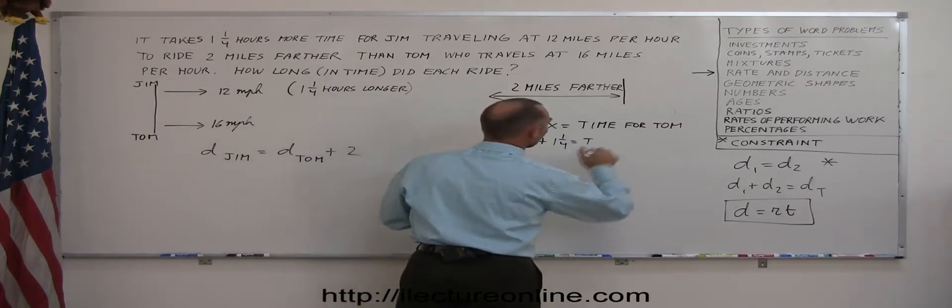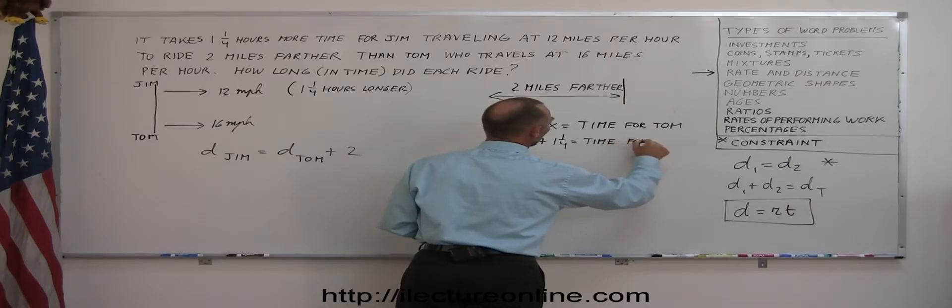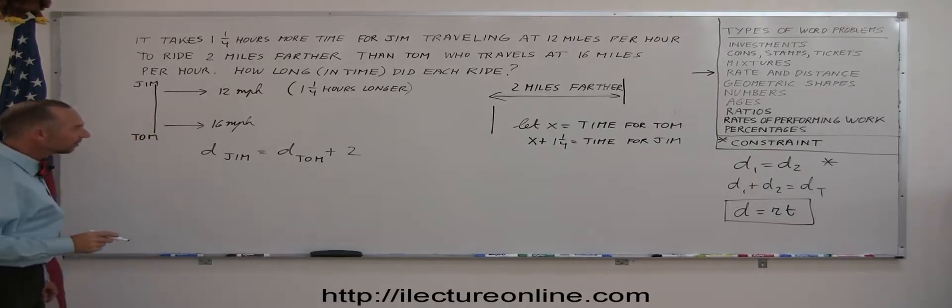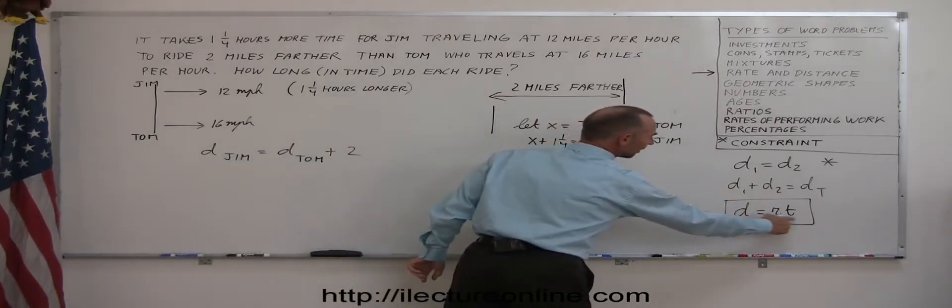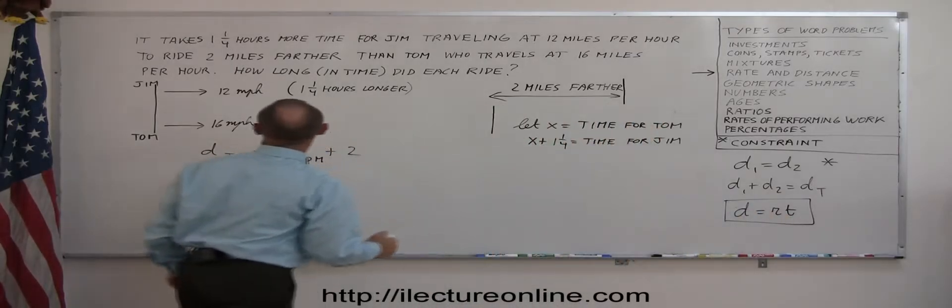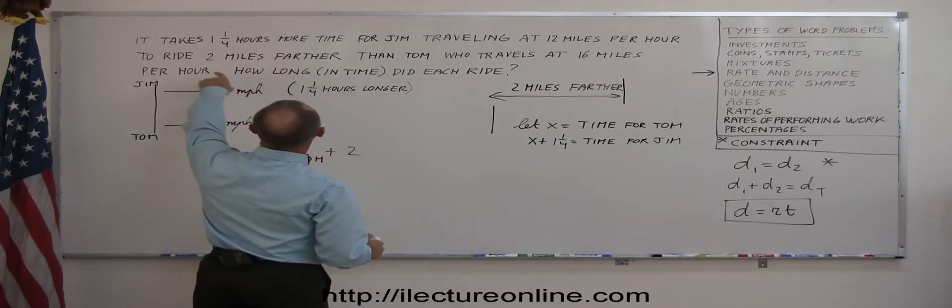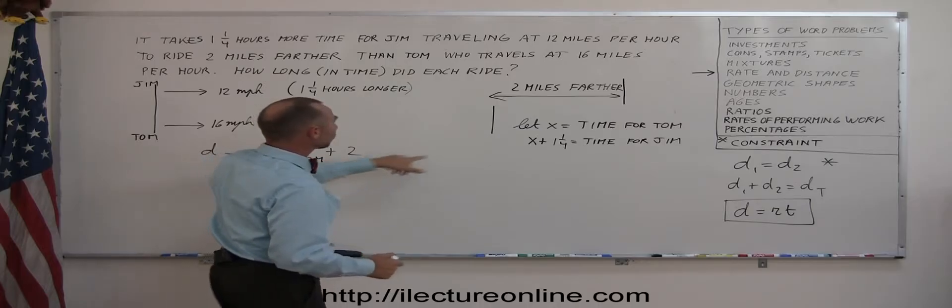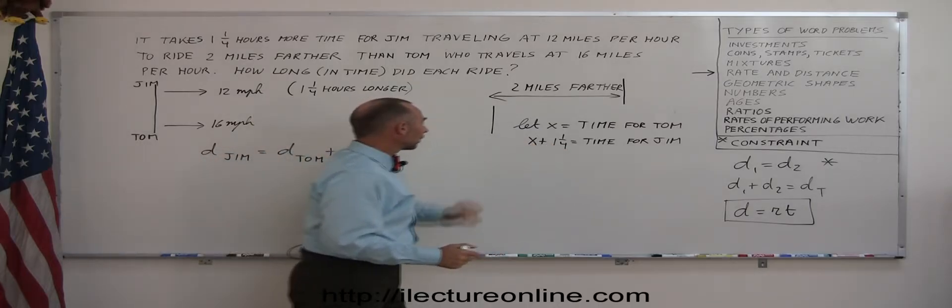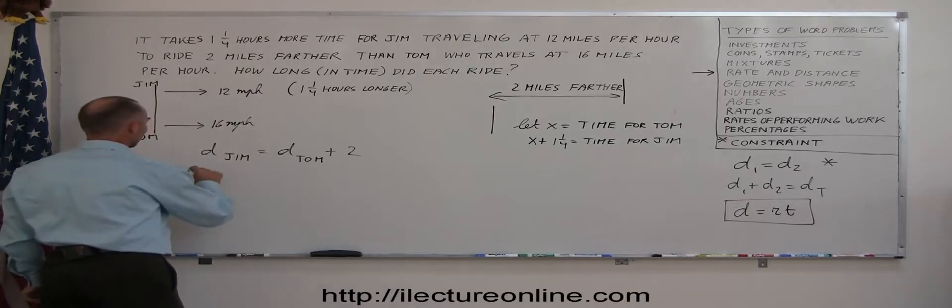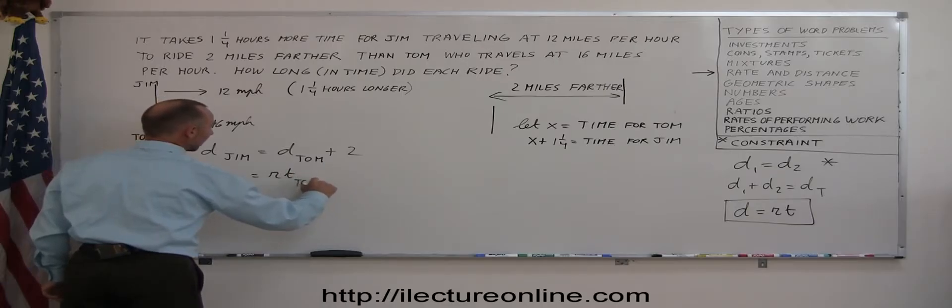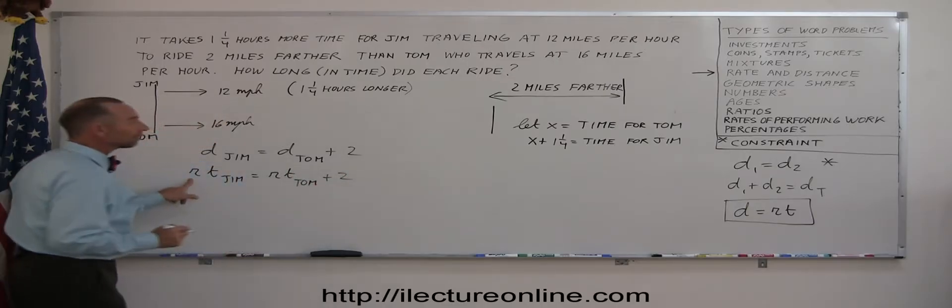And remember that distance equals rate times time. Well, we don't know the time either. Hmm. So maybe what we want to do here as well, say, let x equal the time that the person took, the person that took the smallest amount of time. What is it? Let's see here. One and a quarter hours more time for Jim compared to Tom. So let x equal the time for Tom. And since Jim took an hour and a quarter longer than Tom, then you can say that x plus one and a quarter hours is equal to the time for Jim.